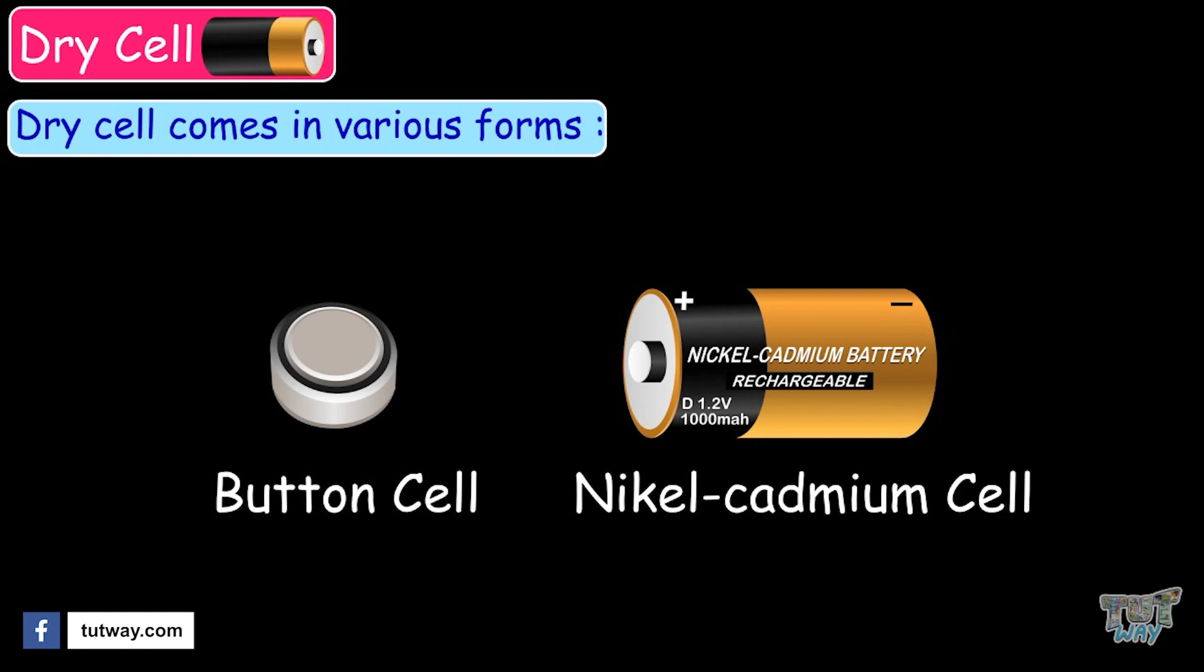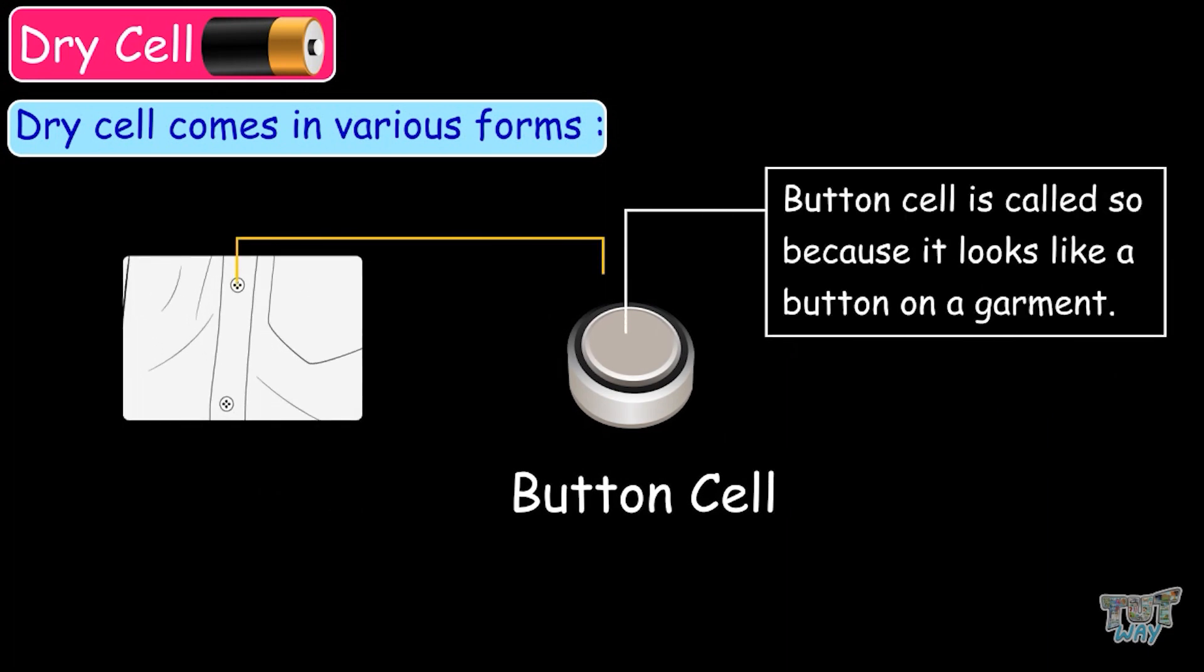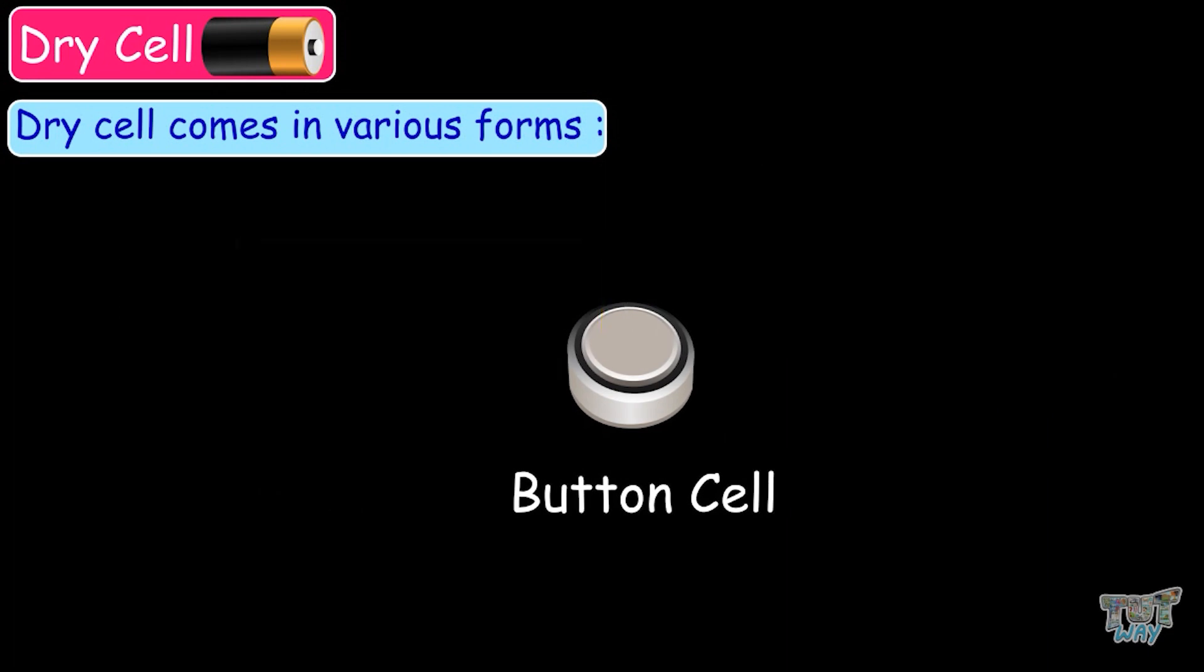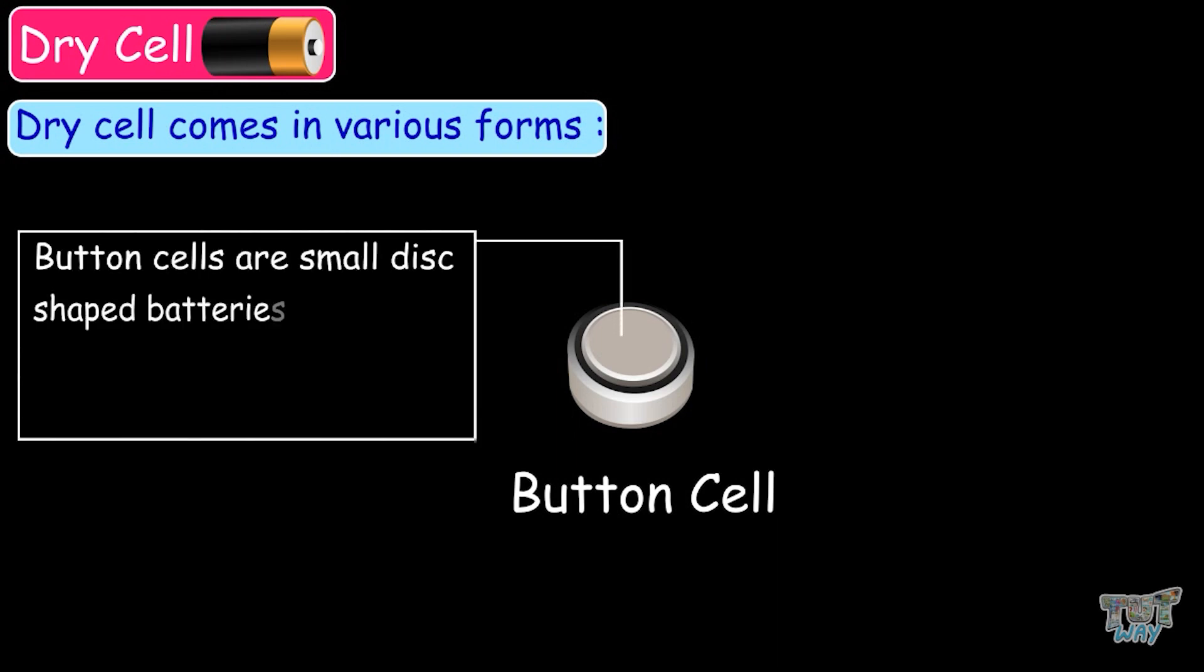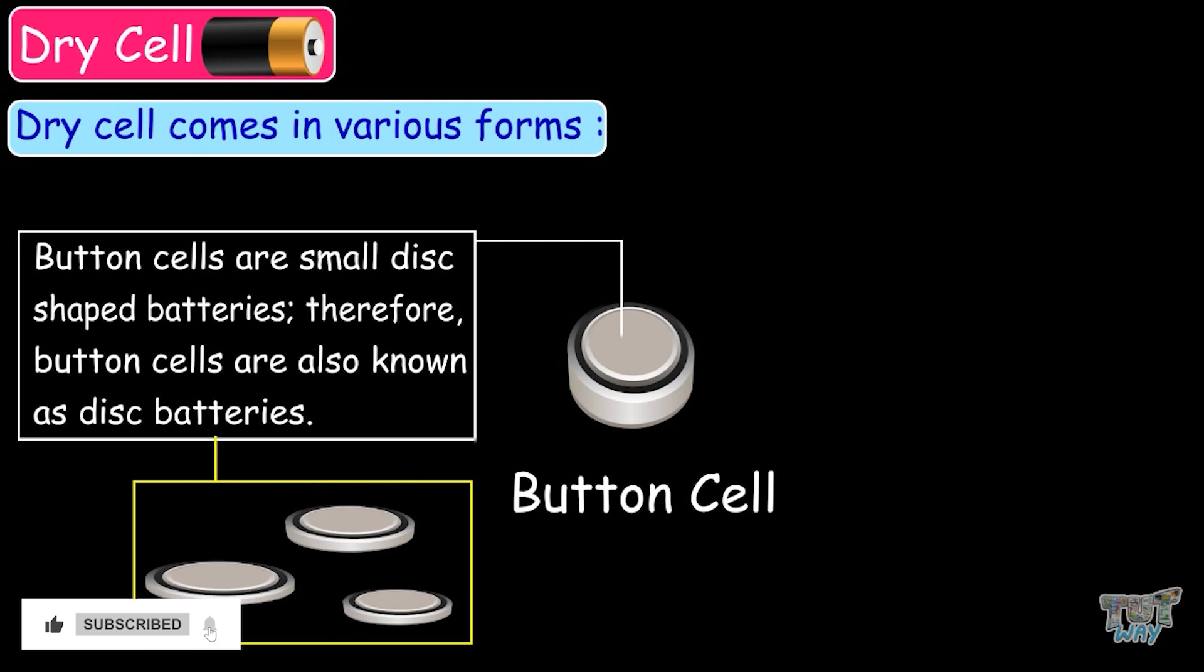The dry cell comes in various forms, like button cells and nickel-cadmium cells are the better versions of a dry cell. The button cell is called that way because it looks like a button on a garment. Button cells are small disc-shaped batteries. Therefore, button cells are also known as disc batteries.